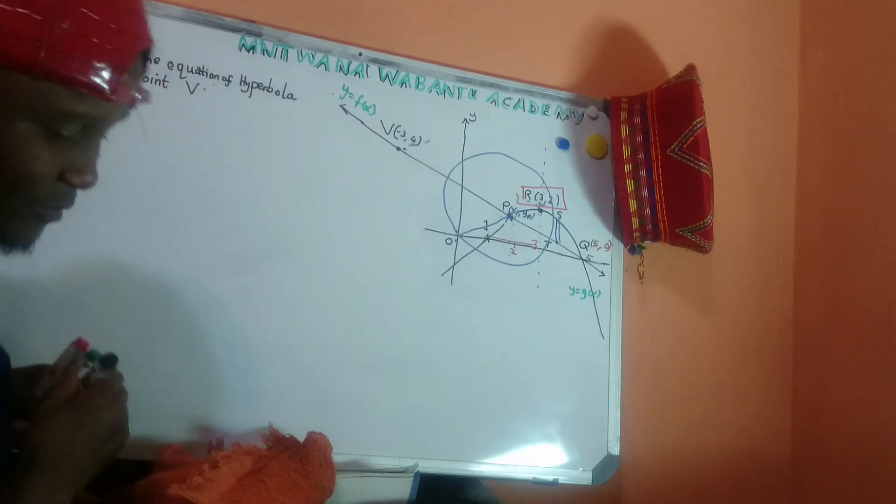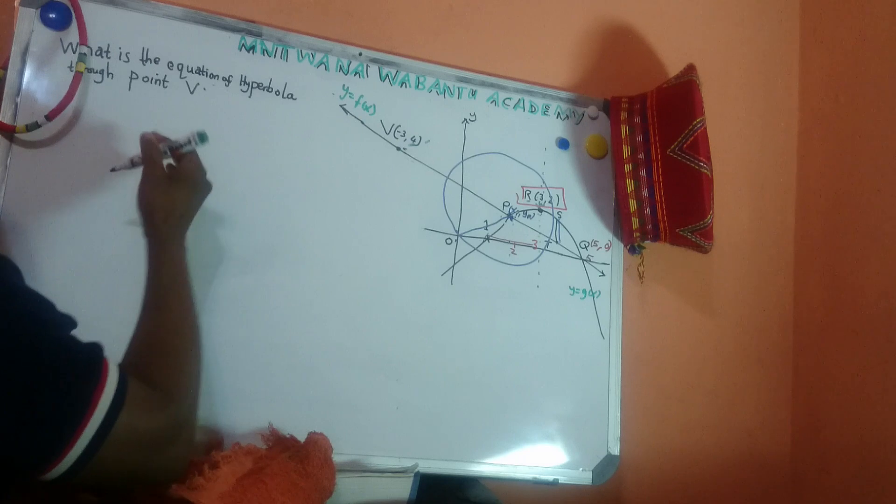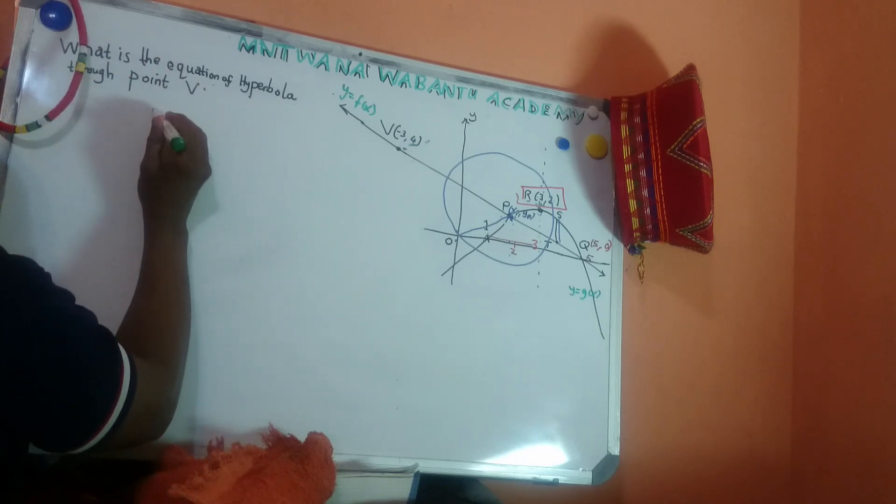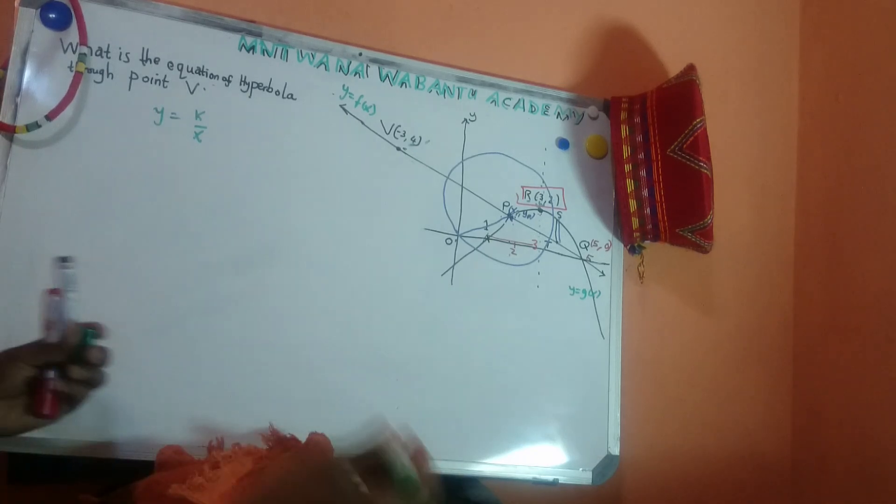So now, quickly man, let's go. So, the standard equation of hyperbola, just normal, simple standard equation of hyperbola. You always write y equal to k over x. That's the standard equation of hyperbola.